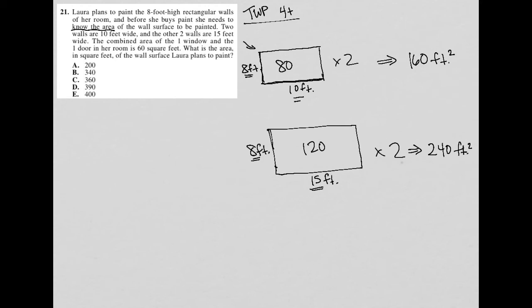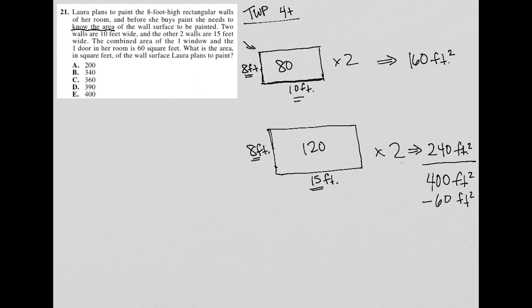The next sentence says, 'The combined area of the one window and the one door in her room is 60 square feet.' Now they're talking about the entire room. Her room is the sum of the four walls, which is 400 square feet. However, we need to subtract out the window and the door, which we're told is 60. So I'm going to say minus 60 square feet. Therefore, her room in terms of paintable surface area is 340 square feet.